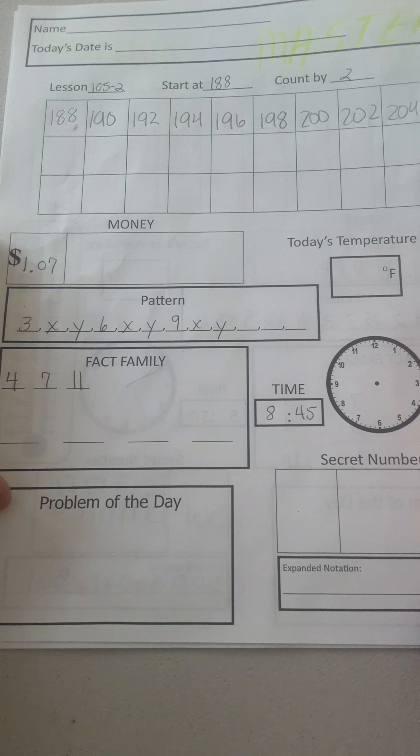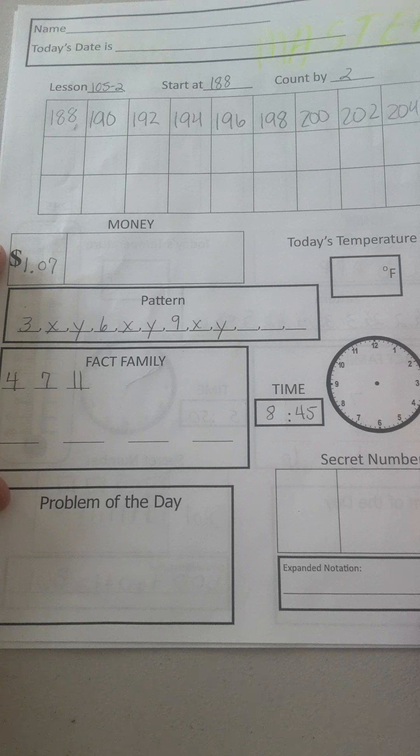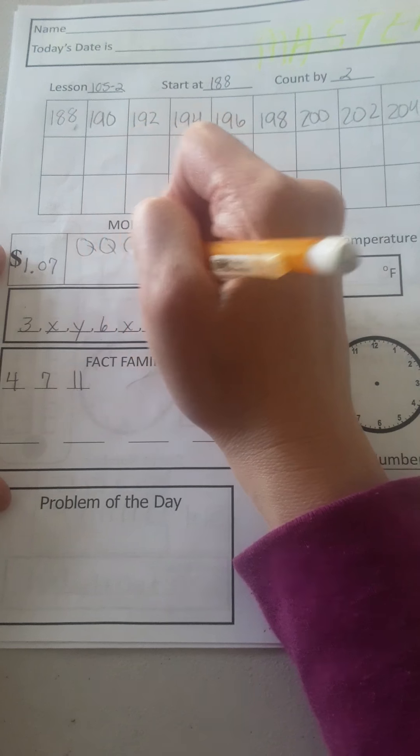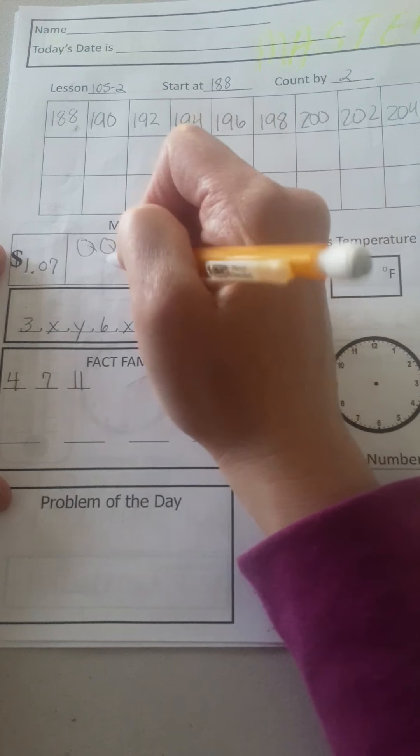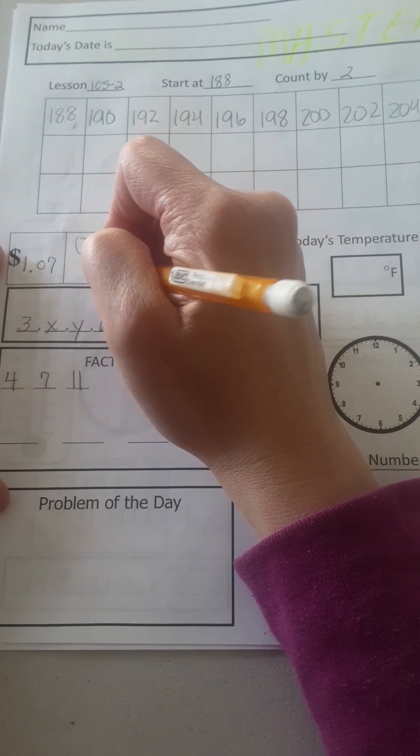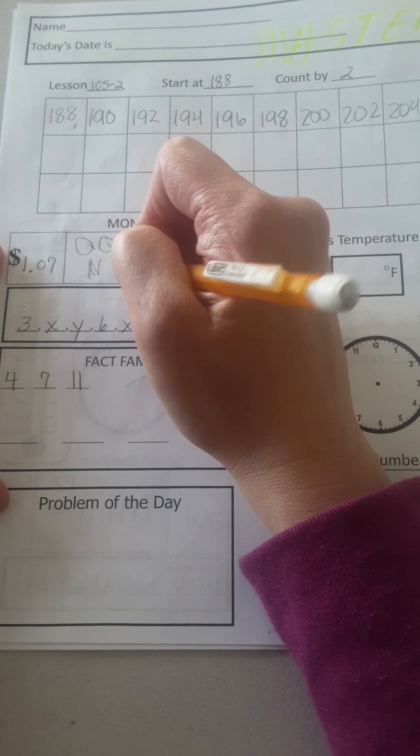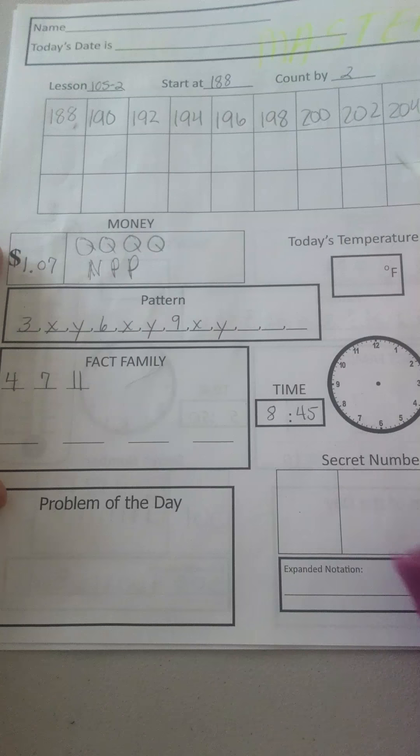Money, we have $1.07. Four quarters makes $1. And then I have, I can use a nickel, which is 5, 6, and 7.